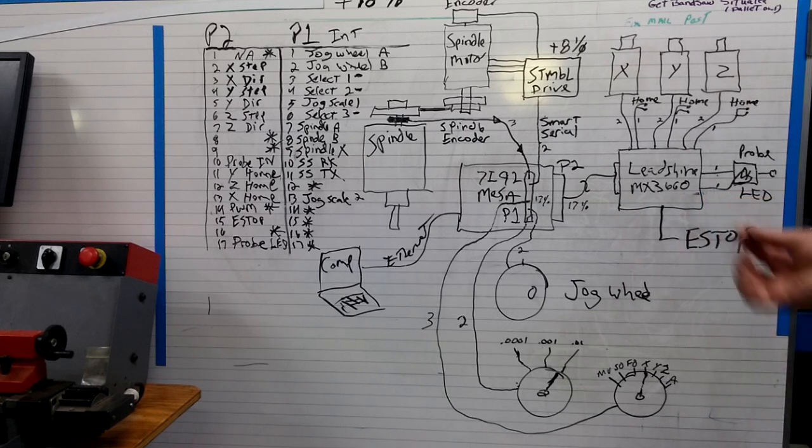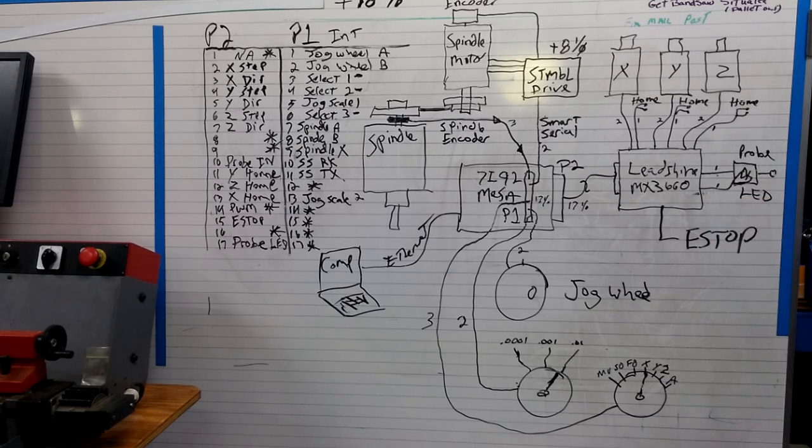Alright, so bear with me here. I obviously don't have audio down yet. So some people had questions about how the green machine was hooked up. So I thought I'd do kind of a block diagram showing how things are connected.